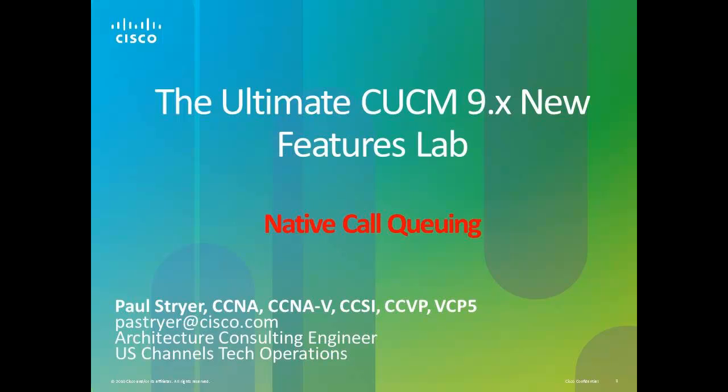The third CIPC phone will be the person calling in for help. We will first configure a hunt group, hunt list, and hunt pilot, but we will not configure or turn on native call queuing. Native call queuing is turned off by default. We will test the hunt group with no native call queuing, and then we will turn on native call queuing and test the call again and let the call roll into the queue.